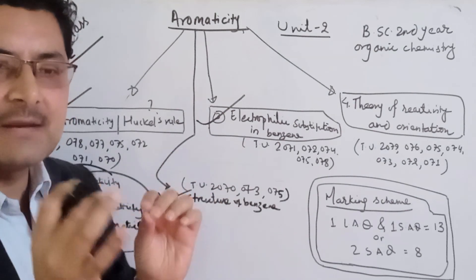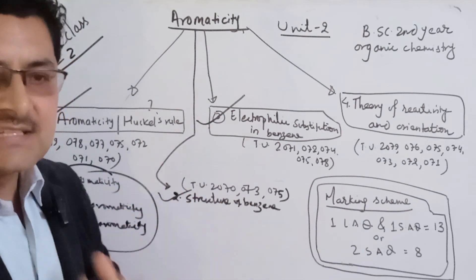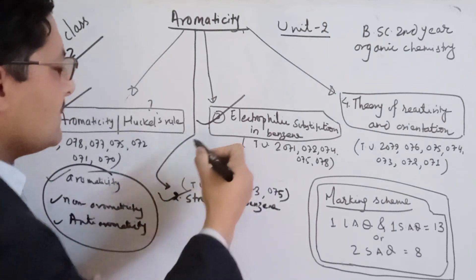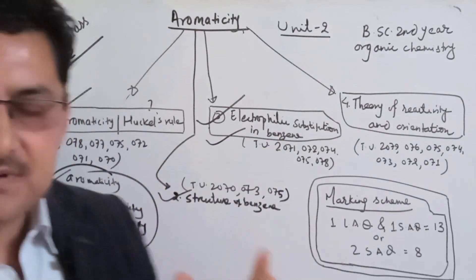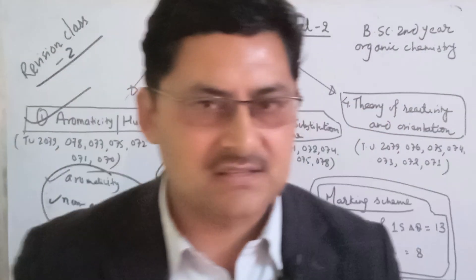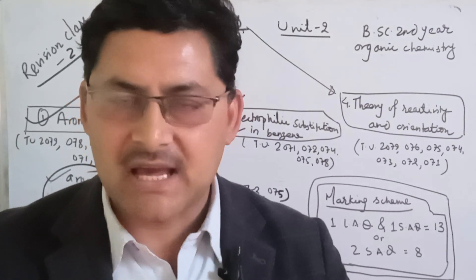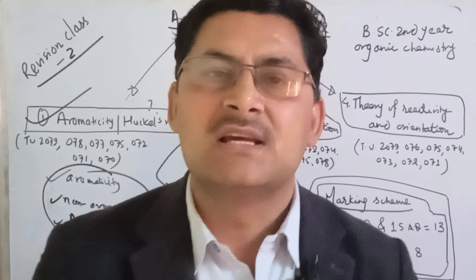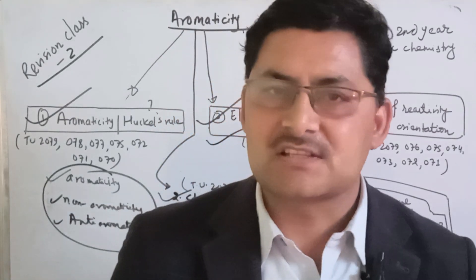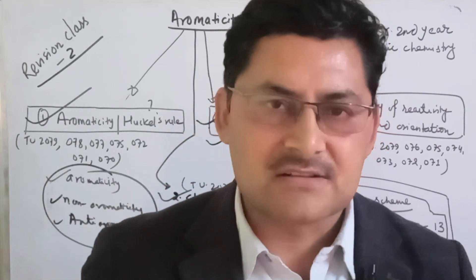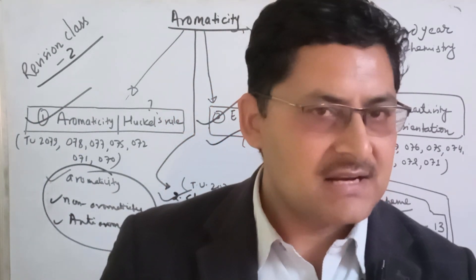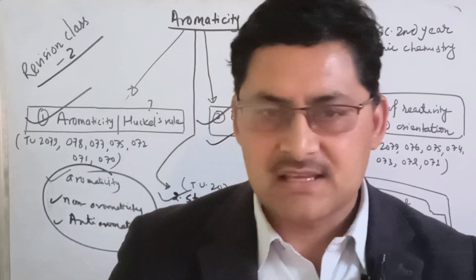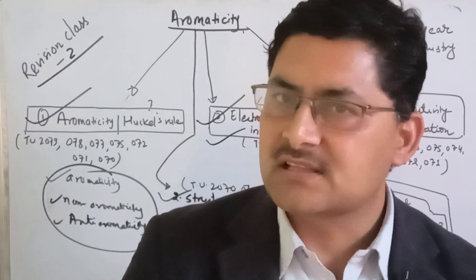A typical example of Electrophilic Substitution includes 5 main reactions: Halogenation, Nitration, Sulfonation with sulfur trioxide, and Friedel-Crafts alkylation and acylation. We have 5 reaction mechanisms — if you know all of them, you know all the reaction mechanisms.